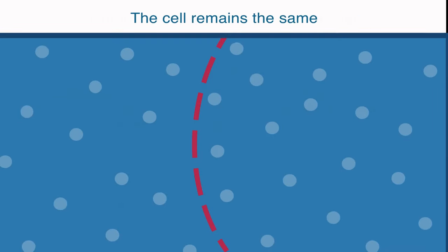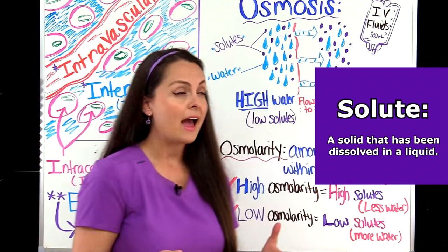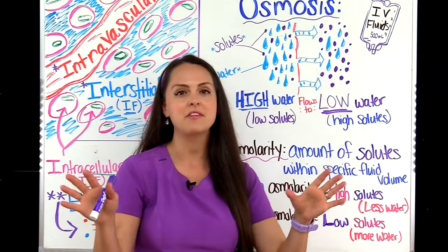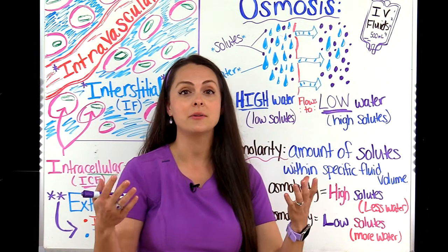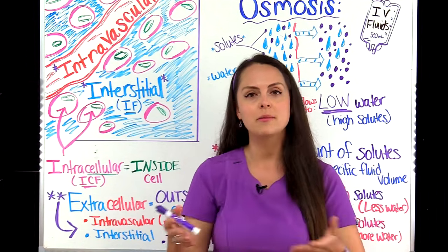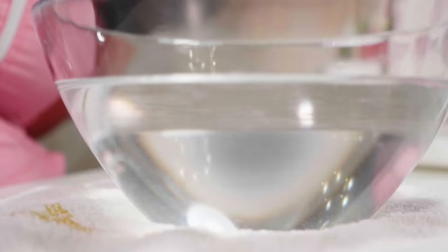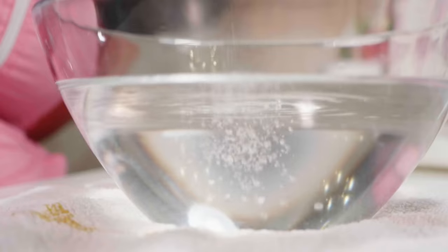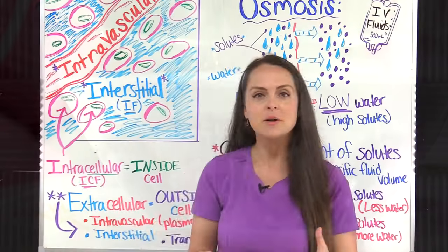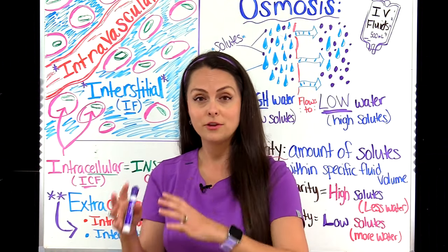So what is a solute? A solute is a solid that has been dissolved in a liquid. There are many different substances that can become a solute in a liquid solution, one example being sodium and chloride. We can take sodium and chloride in their solid form, put them in a liquid, and once they dissolve they become an electrolyte — but they're still a solute in that fluid.